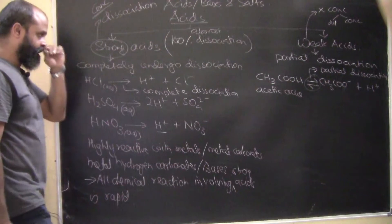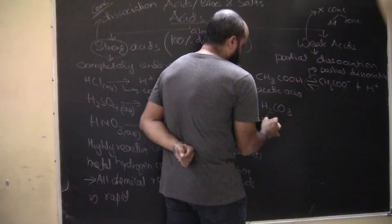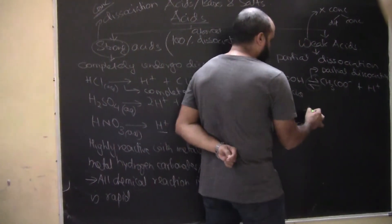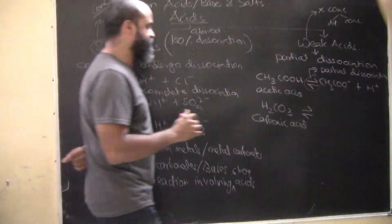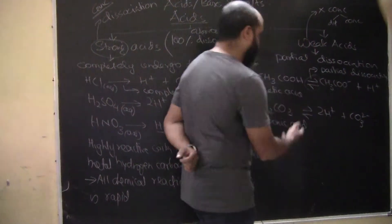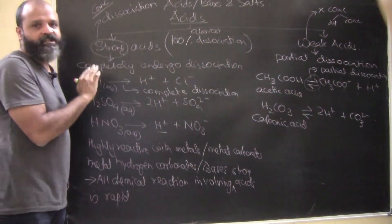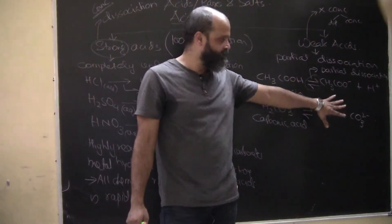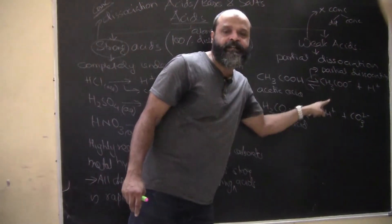Another example of a weak acid is carbonic acid (H₂CO₃). In spite of being a mineral acid, it is a weak acid. It dissociates into 2H⁺ plus CO₃²⁻, but the dissociation here is partial. This is understood - partial dissociation takes place.